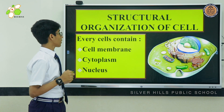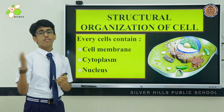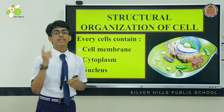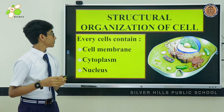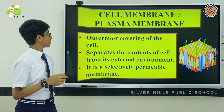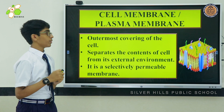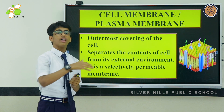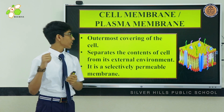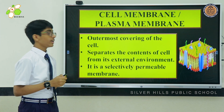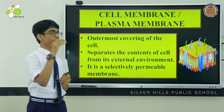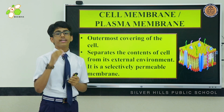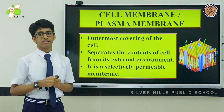Structural organization of cells. Every cell contains a cell membrane, cytoplasm, and nucleus. Cell membrane, also known as plasma membrane, is the outermost covering of the cell. It separates the contents of the cell from its external environment. It is a selectively permeable membrane.